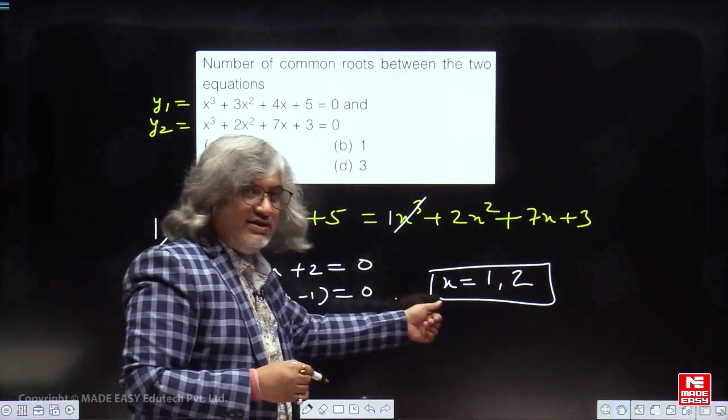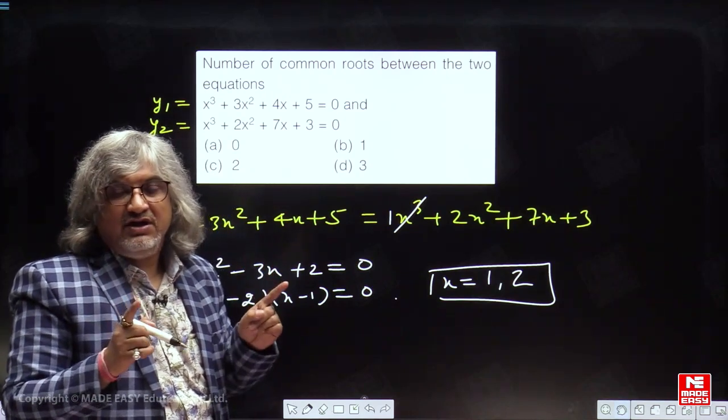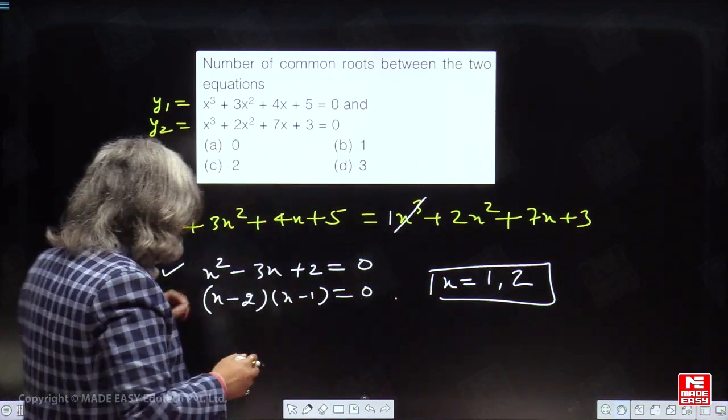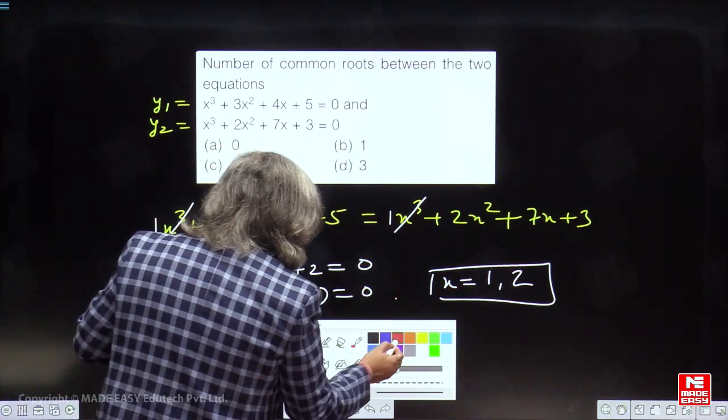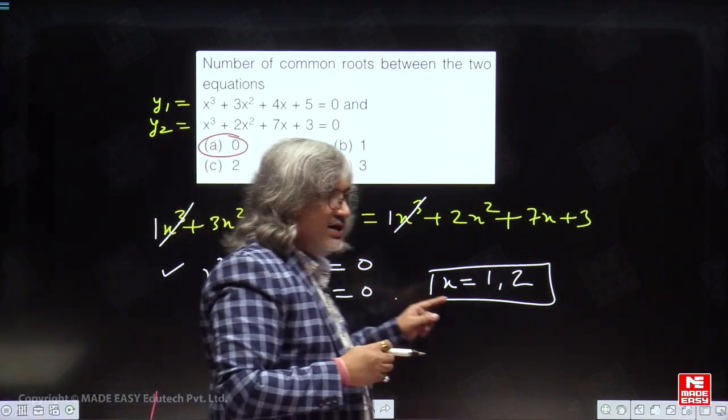So, what are these points? These points are merely point of intersection. These points are not common roots. These points are merely point of intersection. Hence, common roots for the equation is 0. There is no common root between the equation. These are merely point of intersection.